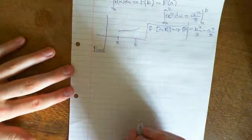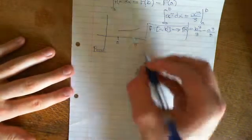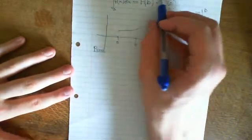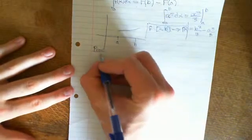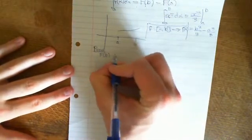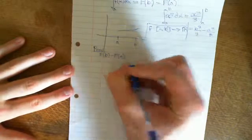The proof uses the mean value theorem big time. What we do is start with this side, the right-hand side. If we look at F(B) minus F(A), consider a dissection.